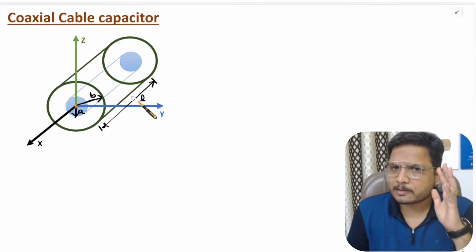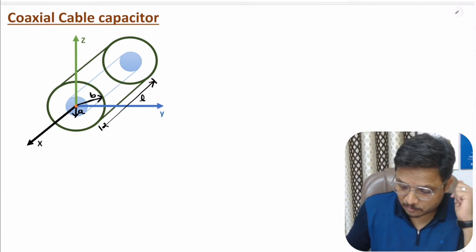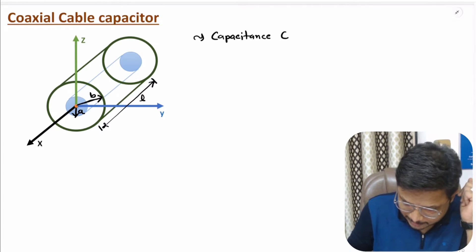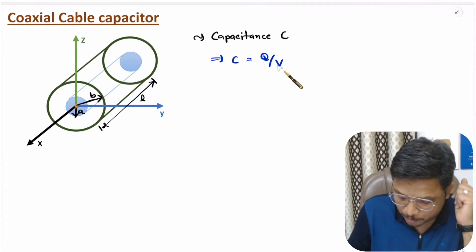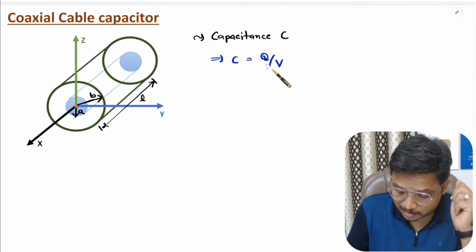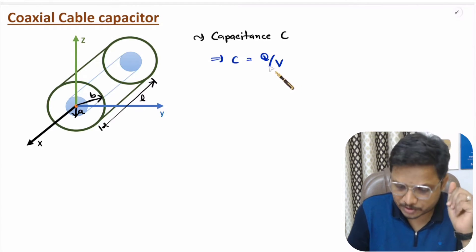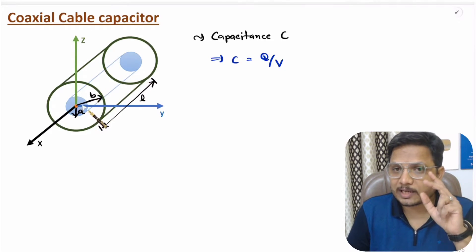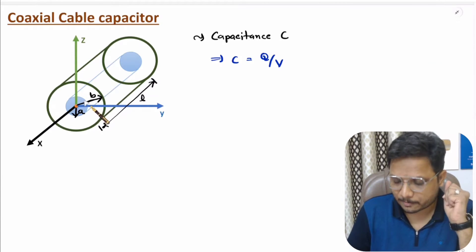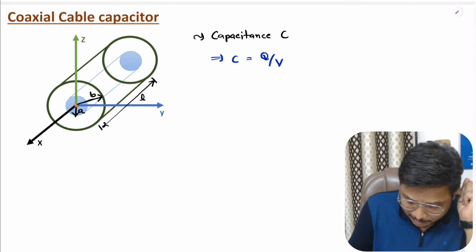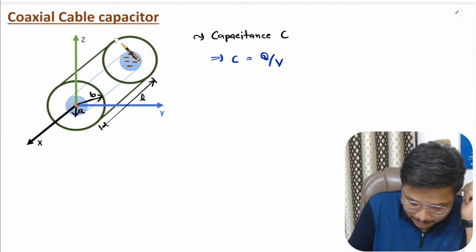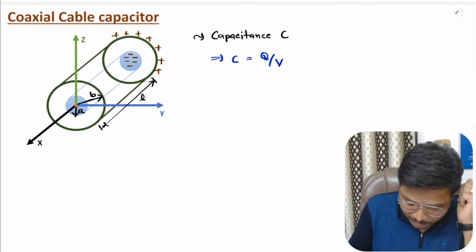Here I'll be following the same process which I followed in my last video. One should know capacitance, denoted by C, is equal to charge divided by voltage. I'll explain how to identify charge and voltage to derive the equation of capacitance C for coaxial cable. We will be considering line charge with the inner conductor. If the inner conductor is having negative charge and outer conductor is having positive charge, then using Q divided by V, I will derive the equation of capacitance.